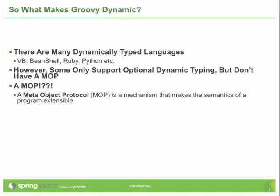Another part has to do with dynamic dispatch. Almost independent of dynamic typing, Groovy has this really dynamic method dispatch mechanism. An important part of that is the MOP, or the MetaObject Protocol, which is the mechanism that makes the semantics of a program extensible. We're going to explore that and see what that really means. Groovy is not just a dynamically typed language — it has really dynamic runtime characteristics associated with it.